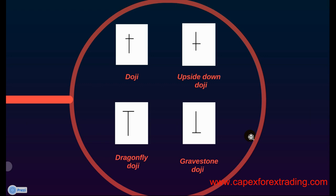The doji candle comes in a few formats, but these are the four main formats. First of all we've got the standard doji candle with the open and close at the upper part of the trading session. Then we have the conveniently named upside down doji — that's basically the opposite of the standard doji with the open and the close at the lower parts of the session. Then we have the dragonfly doji, which has an open and a close at the top of the session, and the gravestone doji is the reversal with the open and the close at the bottom of the trading session.